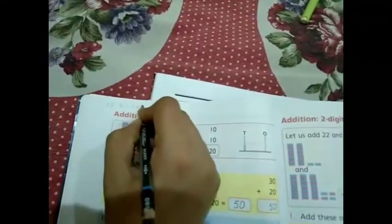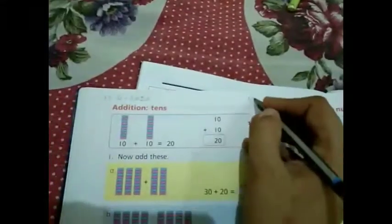It is about addition of tens. Let's take a look in the countdown book, page number 62. Firstly, mention the date and day on the top of the page. Today is Monday.